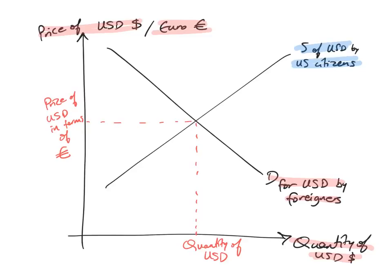Now where the two curves intersect, this gives us the exchange rate. So that would be the price of the US dollar in terms of euros — the unit would be euros — and the quantity of US dollars on the foreign exchange market.